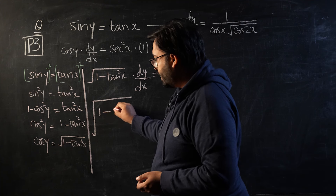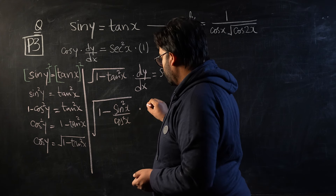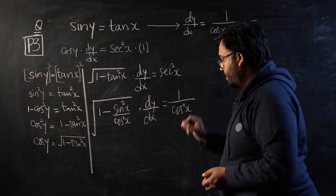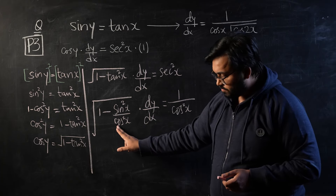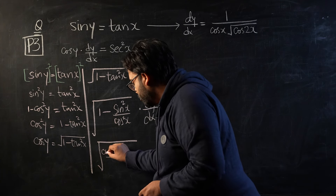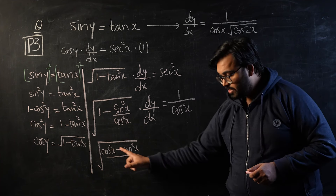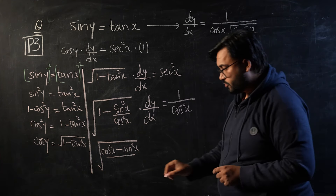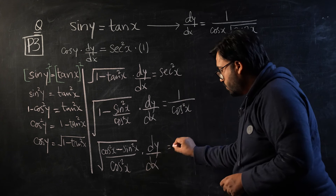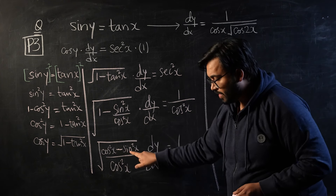I'm going to convert the expression inside the square root into a fraction: 1 minus sin squared x over cos squared x, times dy/dx, equals 1 over cos squared x, since secant squared x equals 1 over cos squared x. If I take the LCM and make a common fraction, this becomes cos squared x minus sine squared x, all over cos squared x, times dy/dx equals 1 over cos squared x. For those sharp with identities, cos squared x minus sine squared x is cos 2x.